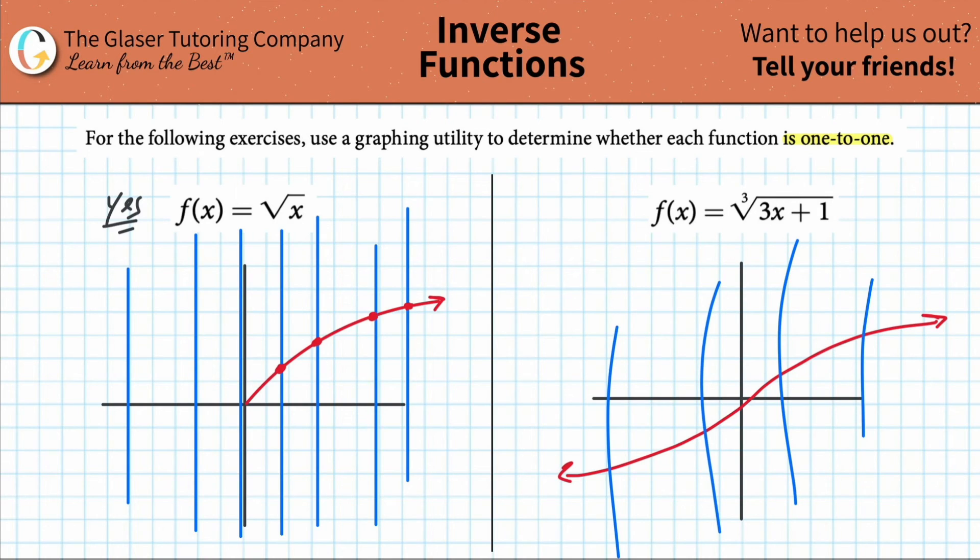Boom, boom, boom, boom, boom. They're not very vertical, but you get the idea. These vertical lines are only going to intersect the graph in one spot. So yes, this is also a one-to-one function.